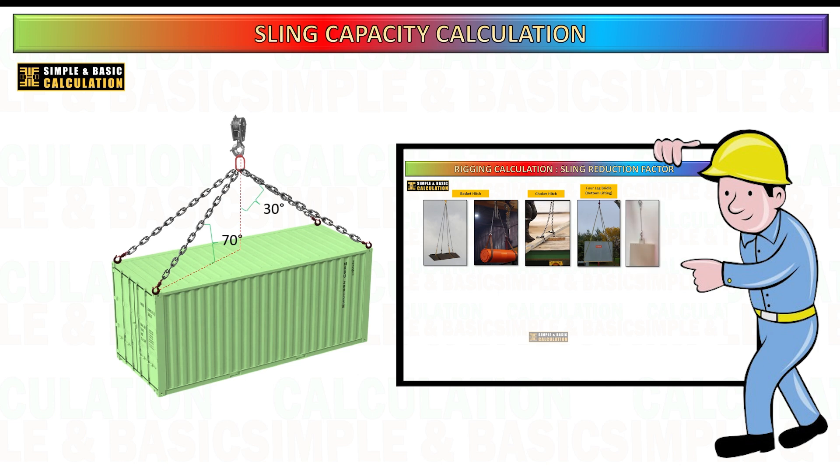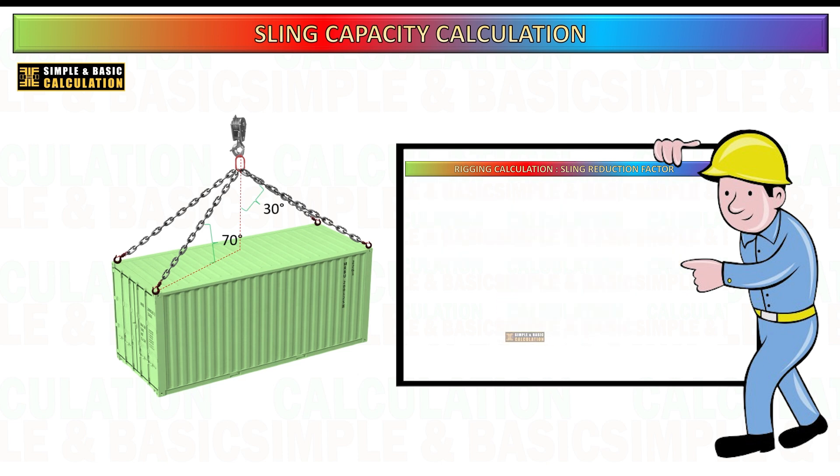In that video, I used an alternative method for calculating the reduction factor, which may involve sling length, sling height, and lifting point distance to center of gravity. Today's discussion will build upon that knowledge, focusing specifically on the case where the sling angle is either horizontal or vertical.